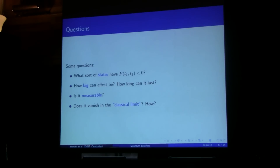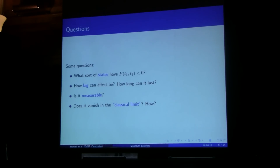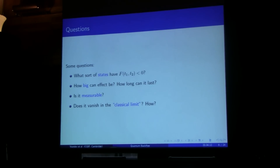So here is this effect — a strange quantum effect. Some questions arise. The first one is: what sort of states display the backflow effect? I've mentioned that they're not just exotic states, but is there anything more I can say? The second question is: how big can this effect be, and how long can it last? Another subtle question: is it measurable — would I actually expect to be able to observe this in a realistic experiment? And then, this is clearly a very non-classical effect, so how does it vanish in the classical limit? I'll address each one of these in turn.